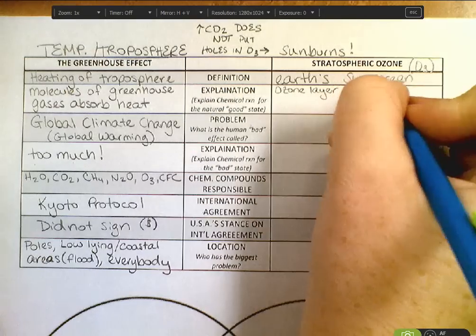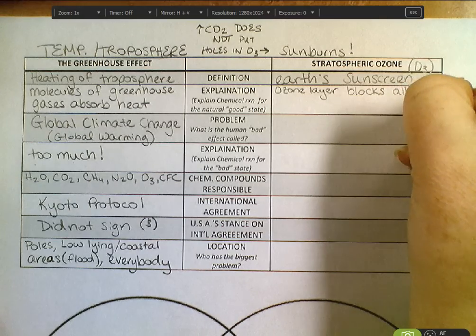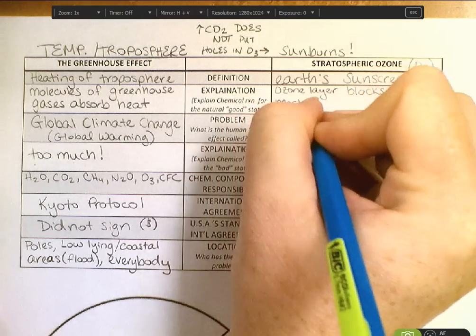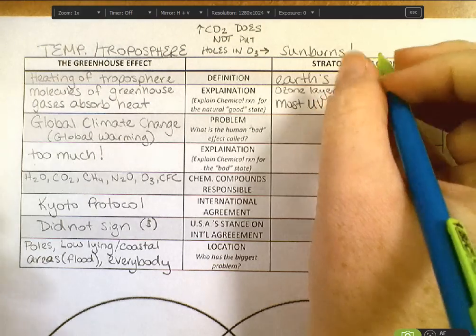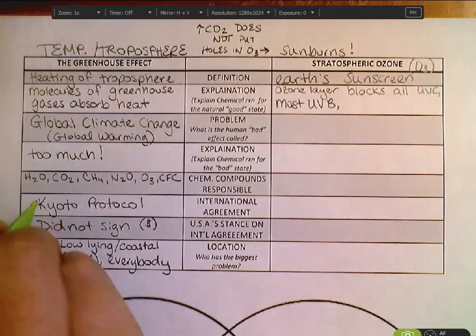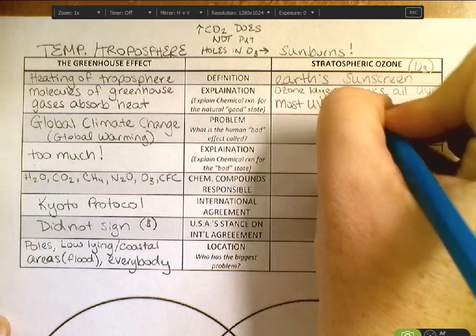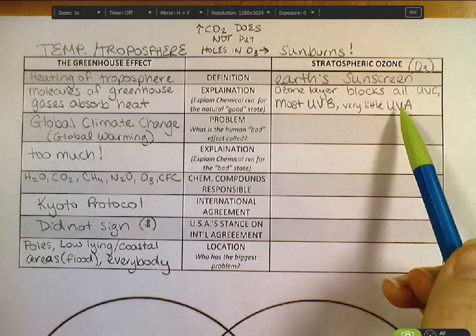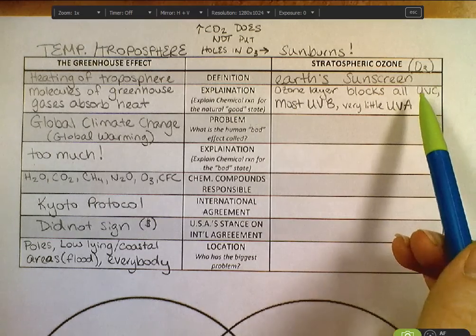The ozone layer blocks UV radiation, but it blocks it to different extents. It blocks almost all UV-C radiation — that's the highest energy radiation. It blocks most UV-B radiation. And it blocks very little UV-A. What that means is that the least powerful sun rays are getting through — those UV-A rays have been coming through forever, and that's okay. Most of the UV-B rays have been blocked, and all the UV-C rays have been blocked by the ozone layer.